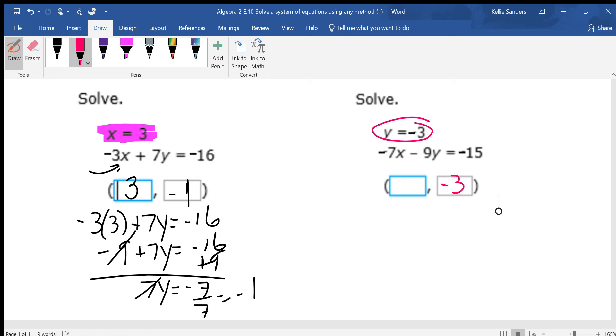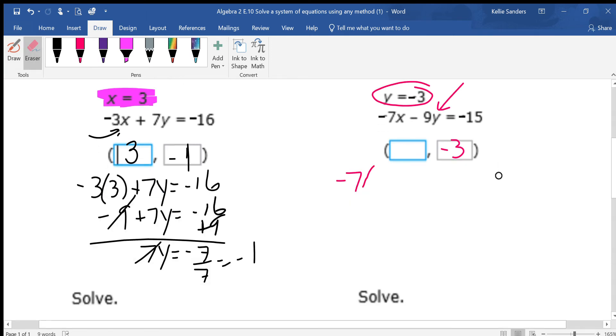We already know y equals negative 3. So we're going to put negative 3 in for that y. Negative 7x minus 9. We know y is negative 3. Equals negative 15.